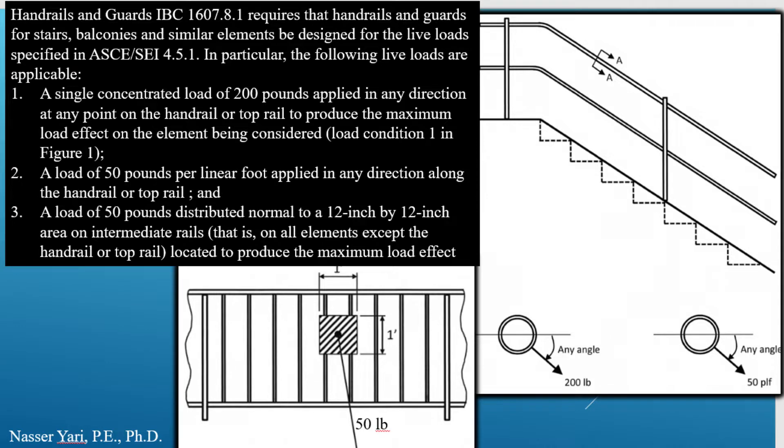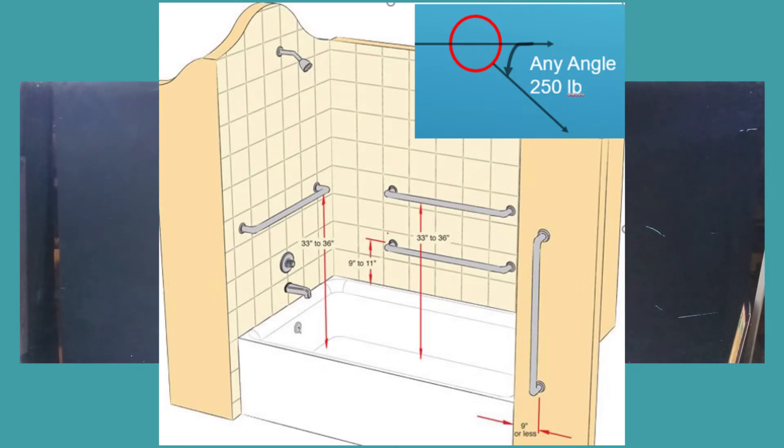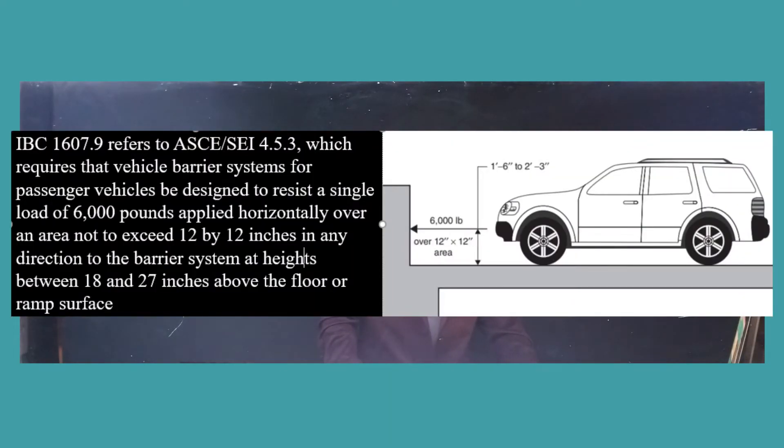Even inside a shower, grab bars must be designed for a 250-pound concentrated applied load at any angle. For vehicle barriers, anything over 6,000 pounds must be accounted for. Note that this is not for roadway barriers — that's a totally different thing covered by FHWA specs and handled in the highway and bridge design courses. For now, let's stay with building loads.